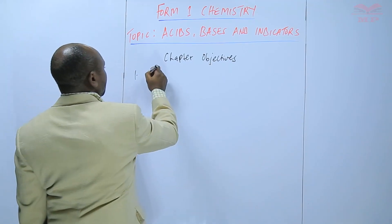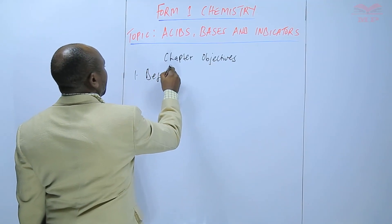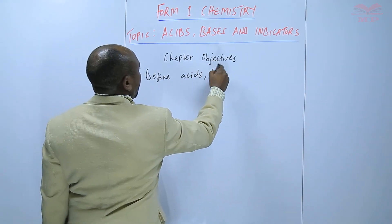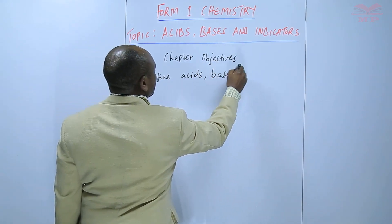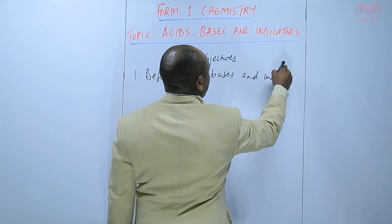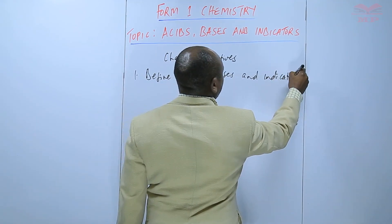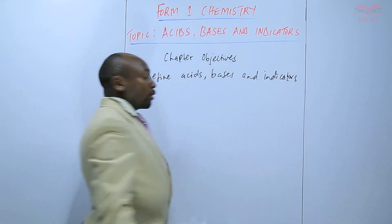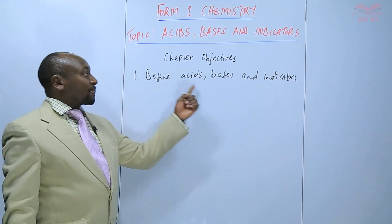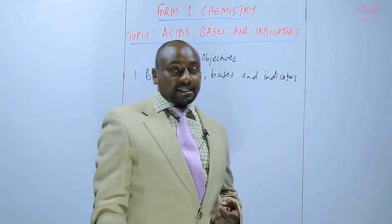The first objective: we should be able to define acids, bases and indicators. So we should be able to know what are acids, what are bases, and what are indicators.